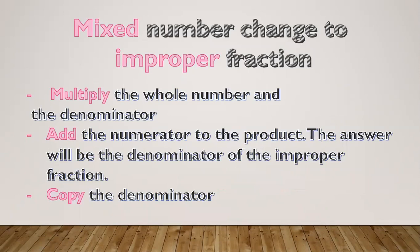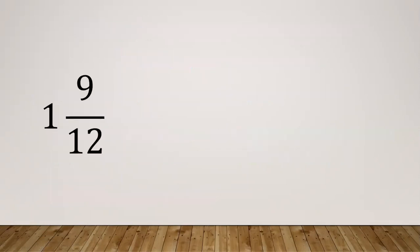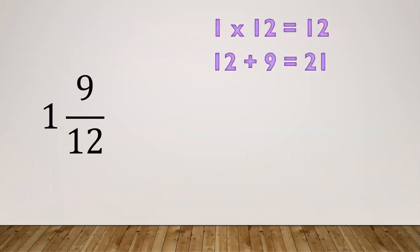Mixed numbers can be changed to improper fractions. The steps are: first, multiply the whole number and the denominator; then add the numerator to the product — that answer becomes the new numerator; and copy the denominator. For example, 1 and 9/12: multiply 1 times 12 equals 12, then 12 plus 9 equals 21. So the improper fraction is 21/12.